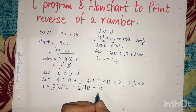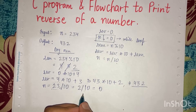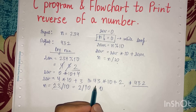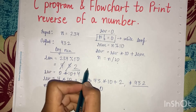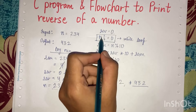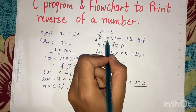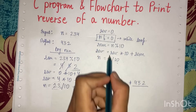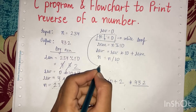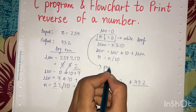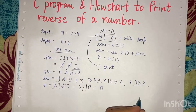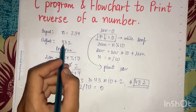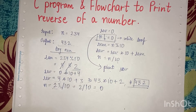Then n = 2 / 10 = 0. It will check the condition again: 0 not equals to 0 — this condition is false, because 0 is obviously equal to 0. So it will come out of the loop and we will print the value of rev. Rev has 432, which is the reverse of the number. I hope you understood the logic.